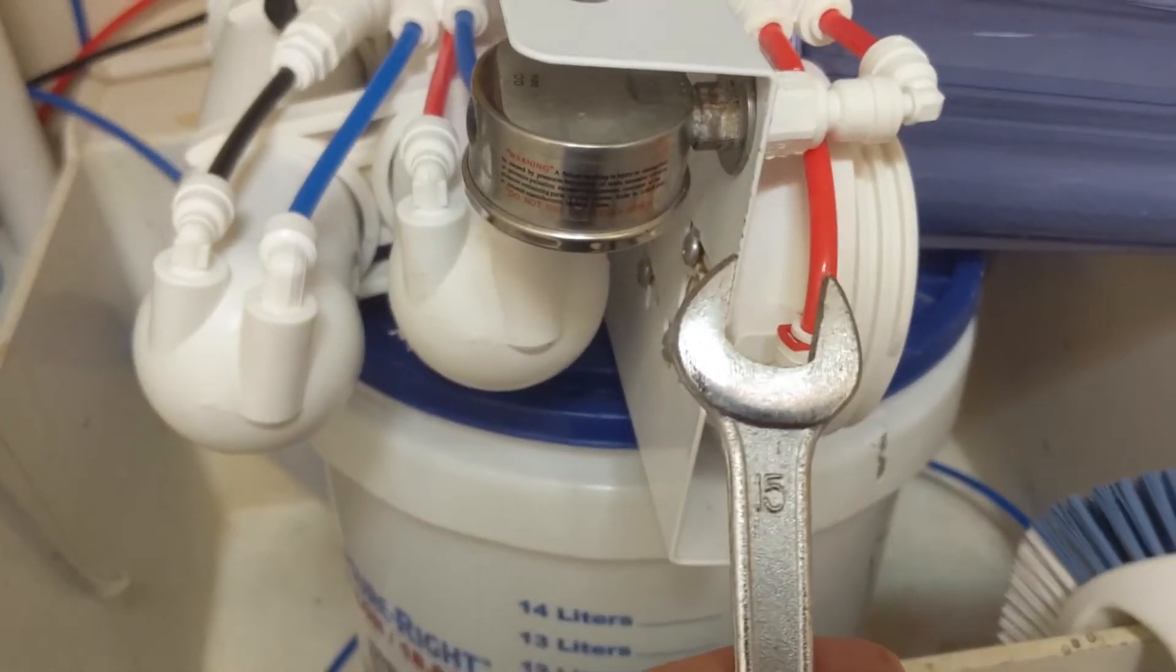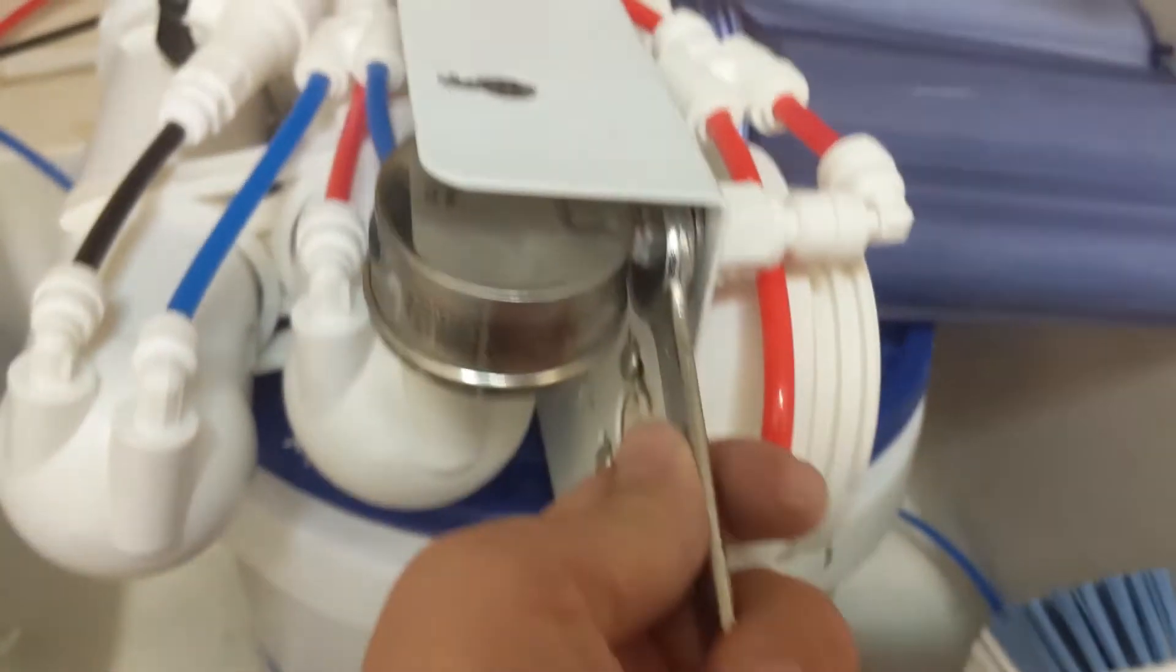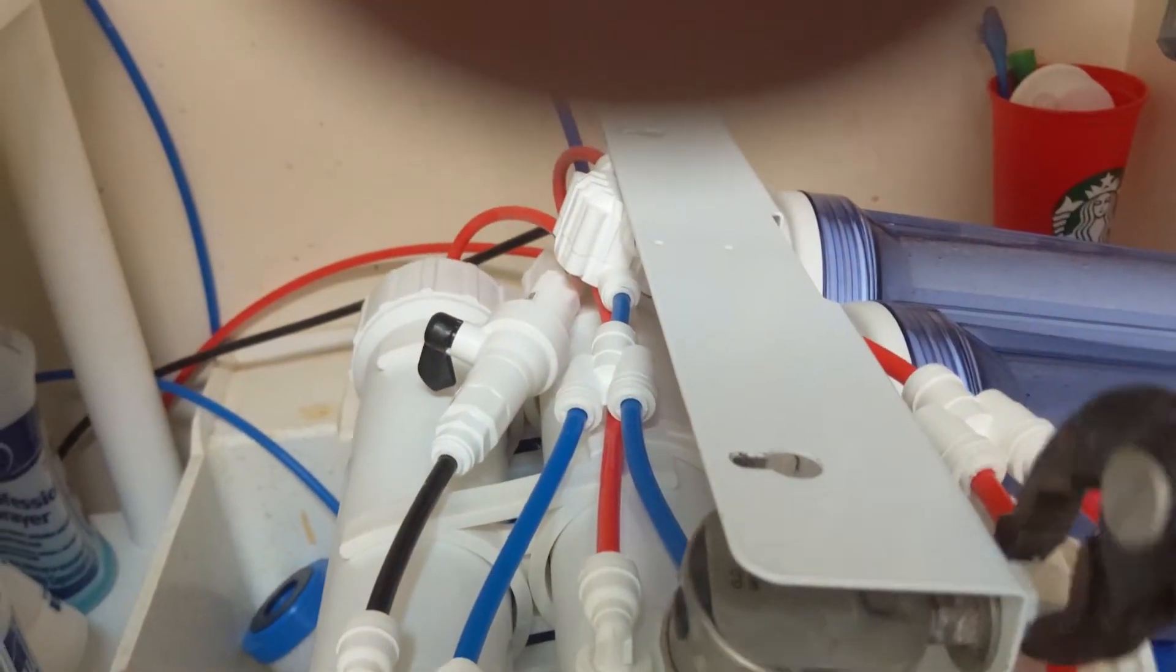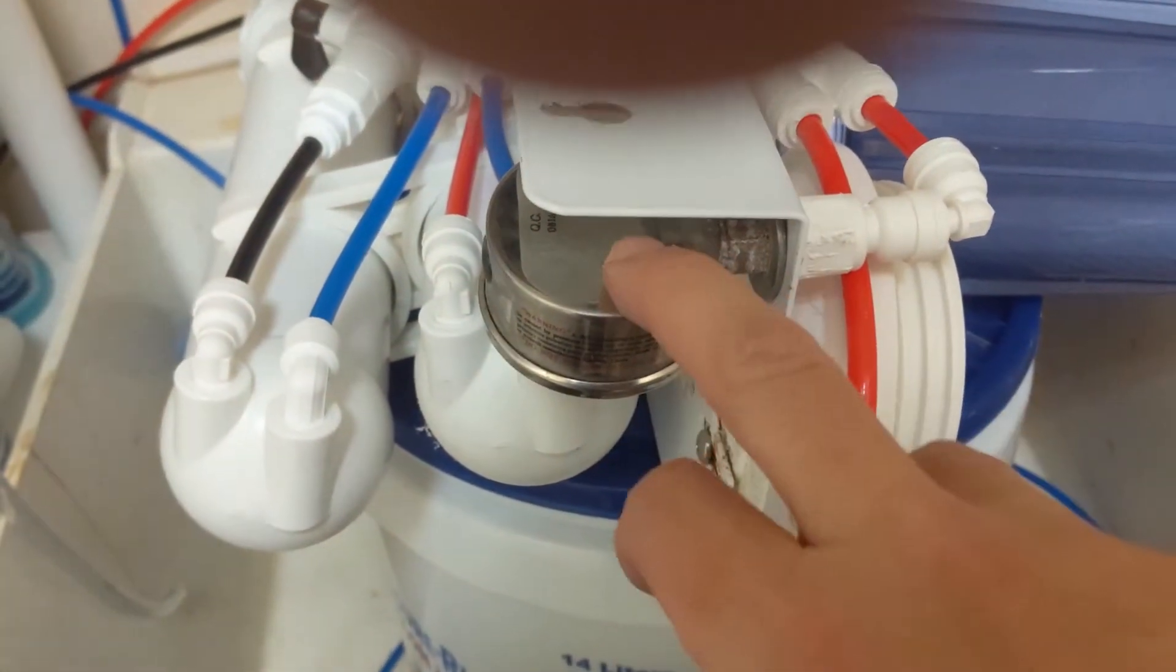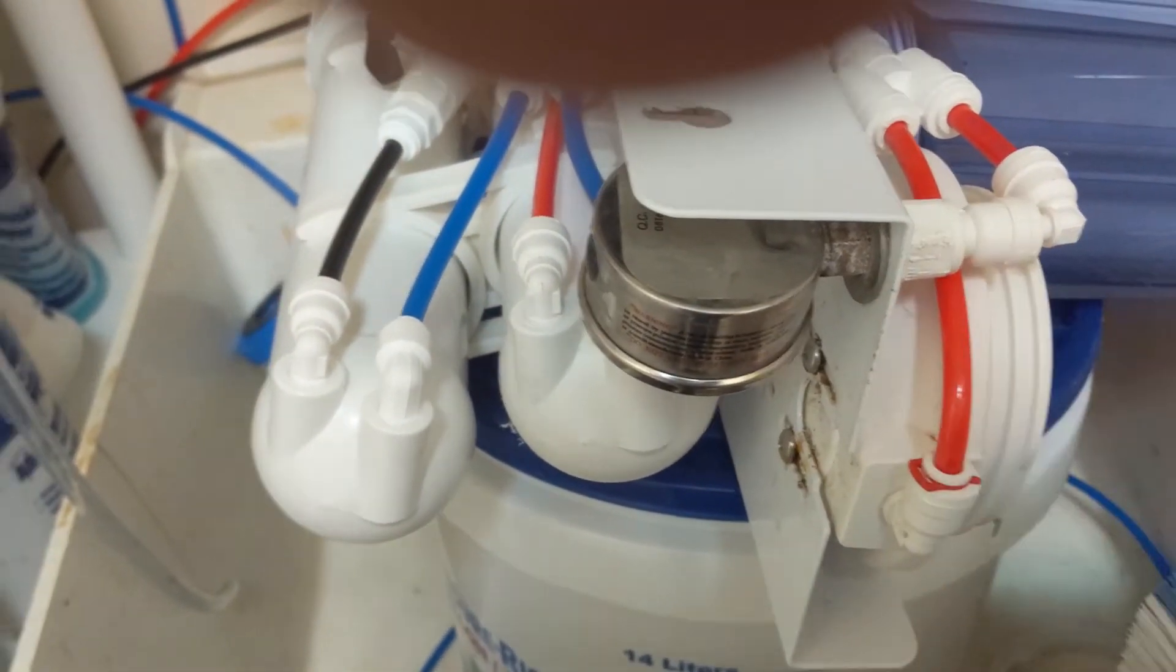Okay, to get the old one off, I'm just using a 15 millimeter wrench to hold the meter, and then I'm using these vice grips to basically loosen up the bottom so that should separate the gauge from the bottom fitting.